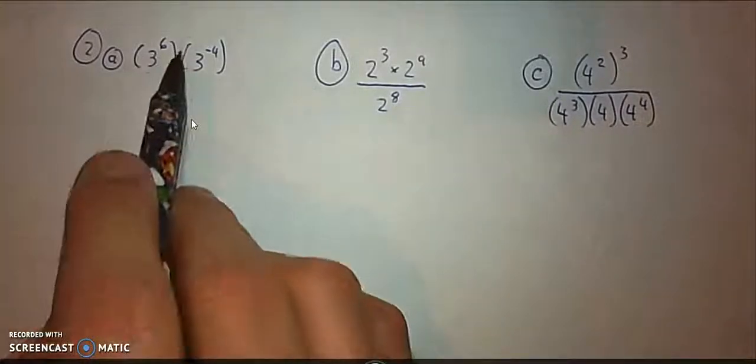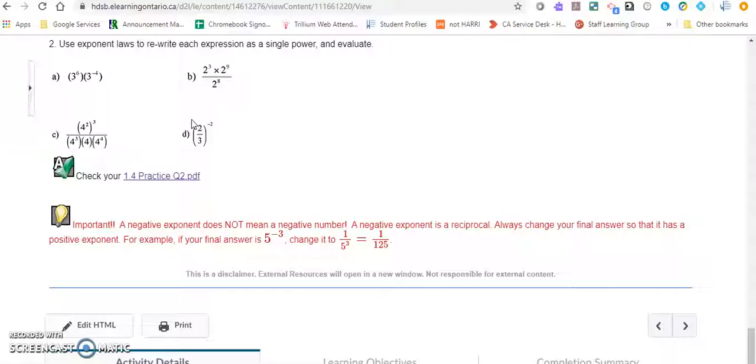So to start, we have question 2A, where you have 3 to the power of 6 times 3 to the power of negative 4. First of all, go back to the question for a sec, and notice it says, Use exponent laws to rewrite each expression as a single power and evaluate, which means for part A, I'm going to write this as 3 to the power of something as one step, and then I'm going to take another step and actually write it as what its evaluated thing is. So this is really important, because if you just punch this into your calculator, you'll get an answer, but you're not actually answering the question. And so one of the main skills we have to talk about is reading the question carefully and making sure you're providing the answer being asked of you.